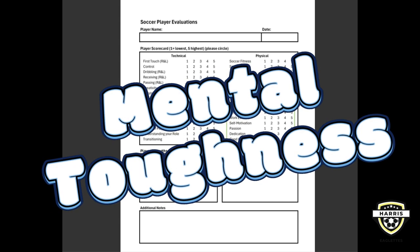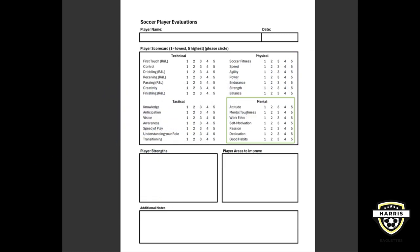Mental toughness means being able to stay strong when things get tough. It's about keeping your head up during challenging moments like losing a game, facing a tough opponent, or missing a shot. This strength helps you stay focused and bounce back from setbacks, proving that you can overcome obstacles with determination. Part of mental toughness too is envisioning the outcome and envisioning what you're going to do when things go wrong — those are things we can all control.